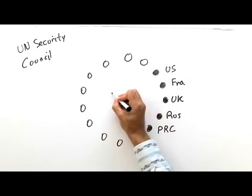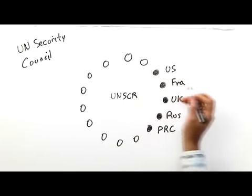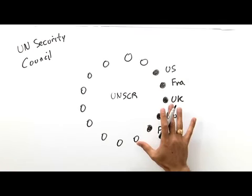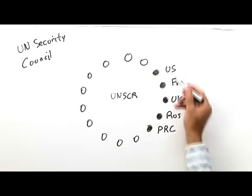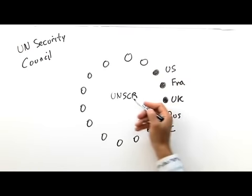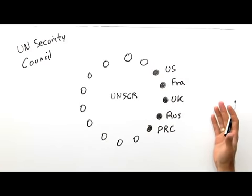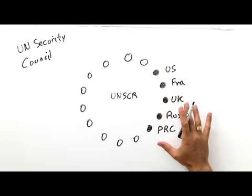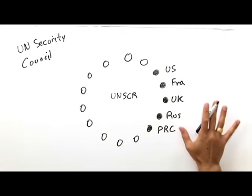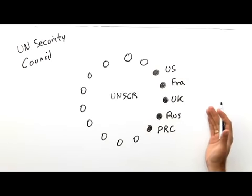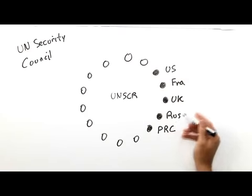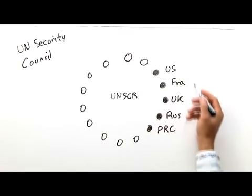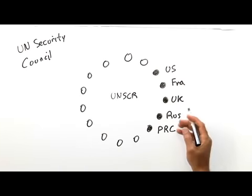In order to pass a United Nations Security Council resolution, it requires nine affirmative votes out of 15 and no vetoes. In other words, if any one of these five countries casts their veto, the resolution fails — it will not be adopted by the United Nations Security Council. There are also abstentions, and contrary to the actual wording of the United Nations Charter, an abstention in practice means a resolution can pass even if one of these five veto-wielding members abstains. You still need 9 out of 15 votes, but an abstention rather than a veto is acceptable.